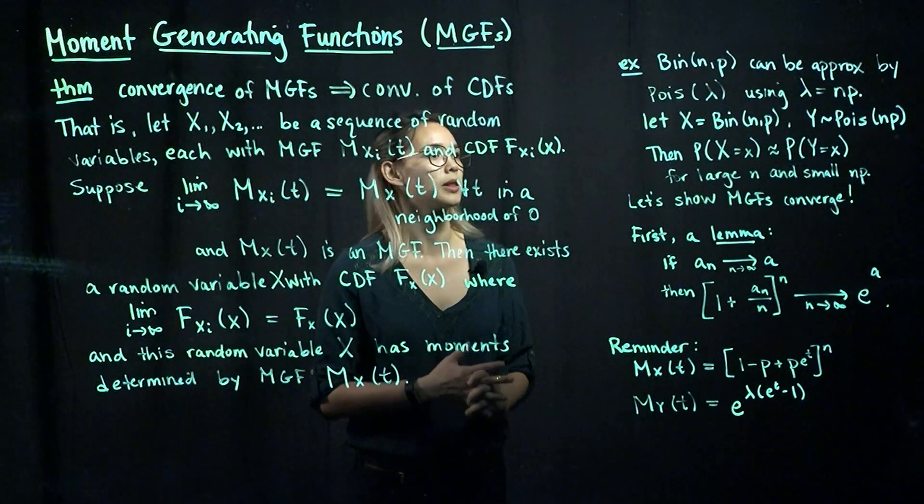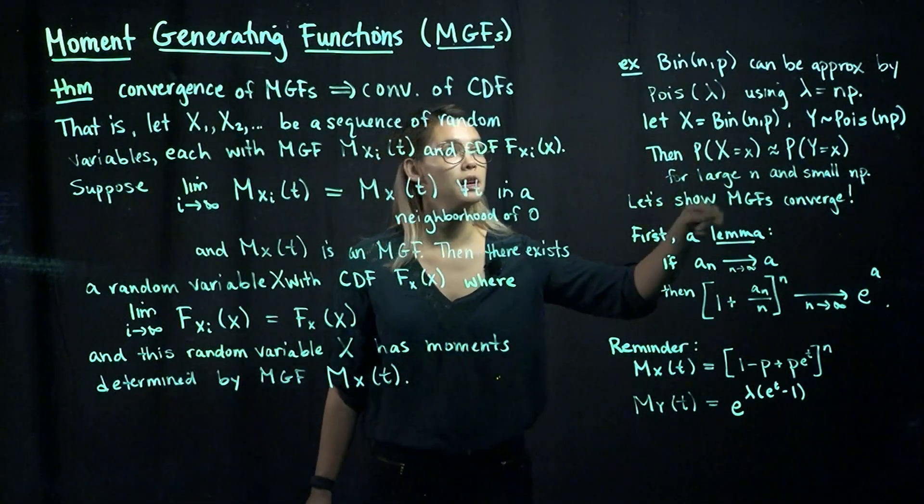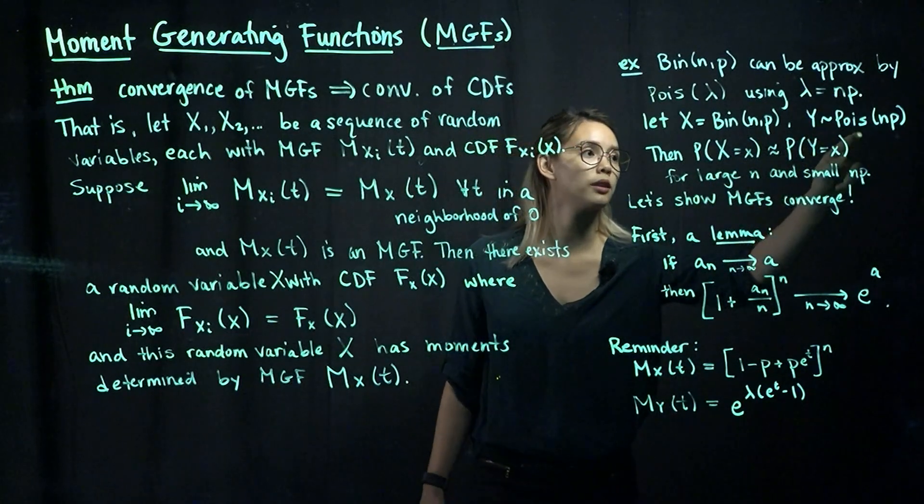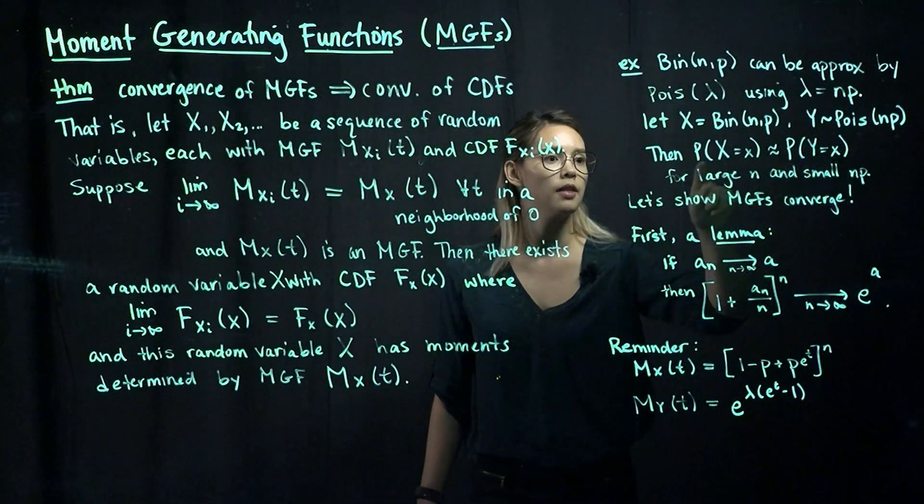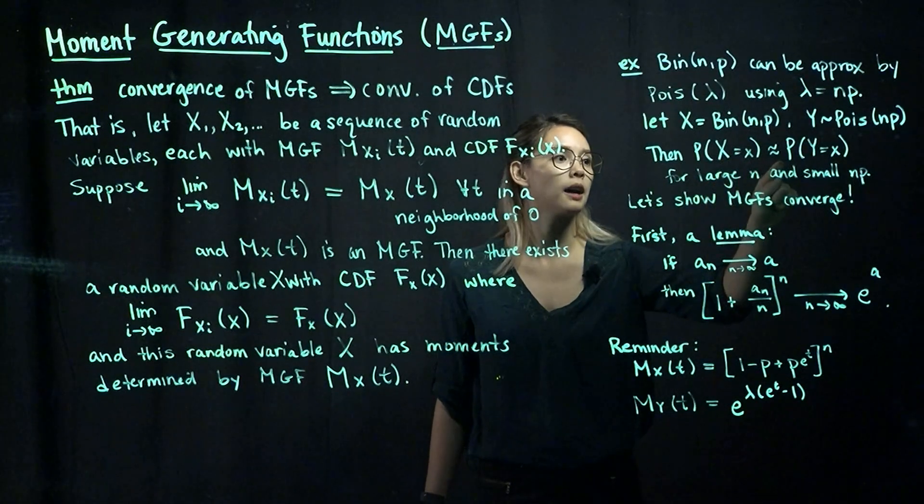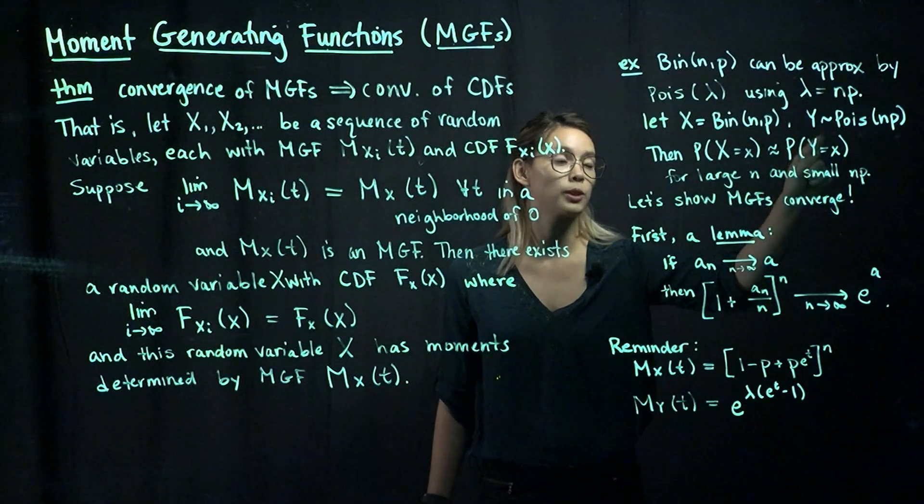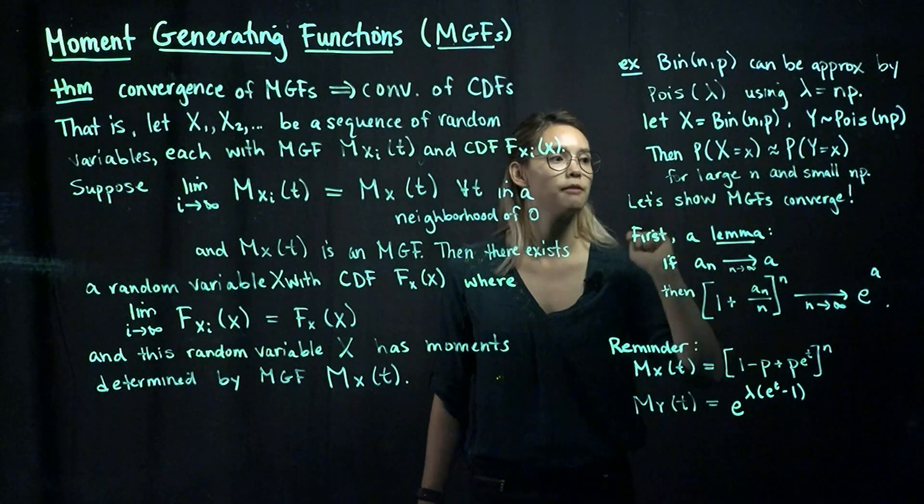This is going to work out approximately if n is large and np is small. In other words, what this is saying is if x is binomial with parameters np, y is Poisson with mean np, then if we want to know what's the probability that random variable x takes on some value, we could approximate it by the probability that our Poisson distributed random variable takes on that value.